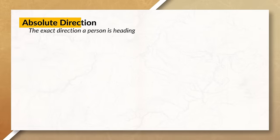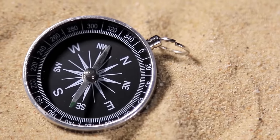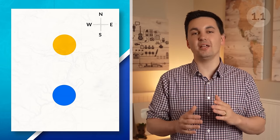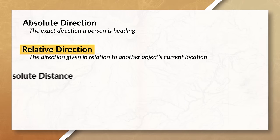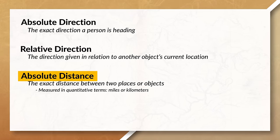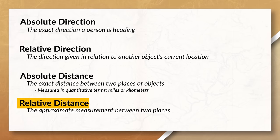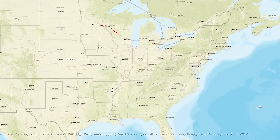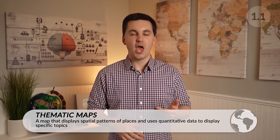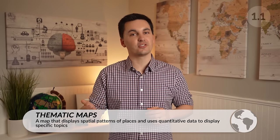Absolute direction is the exact direction you are heading. For example, if you were traveling south, the compass would be at 180 degrees. Relative direction depends on the surrounding area. Absolute distance is the exact distance between two places, normally measured in miles or kilometers. Relative distance is the approximate measurement between two places. For example, if you want to drive from Minneapolis to Orlando, it would take about 23 hours. Next, we have thematic maps, which display spatial patterns of places and use quantitative data to display specific topics.